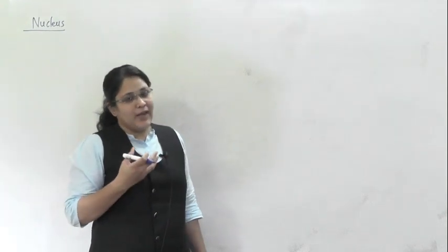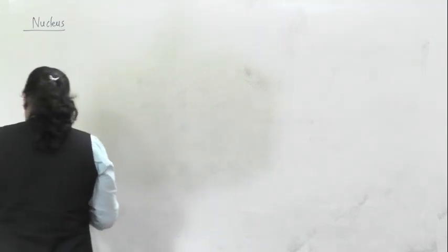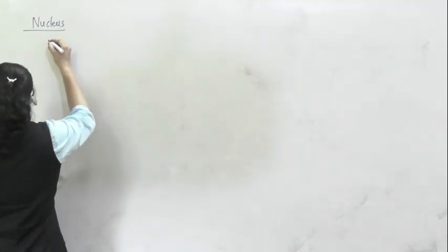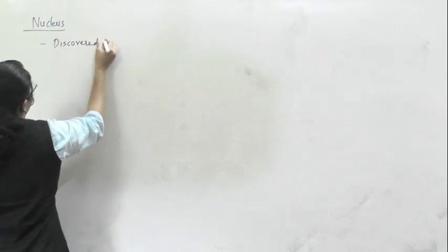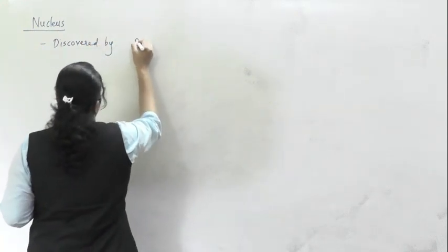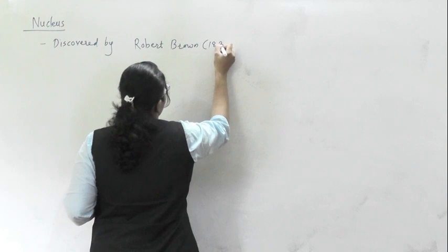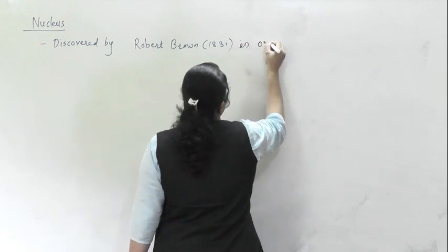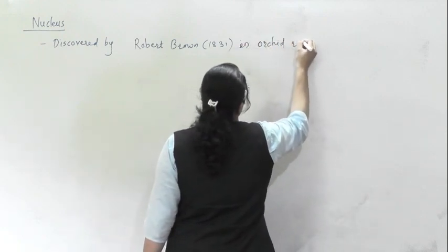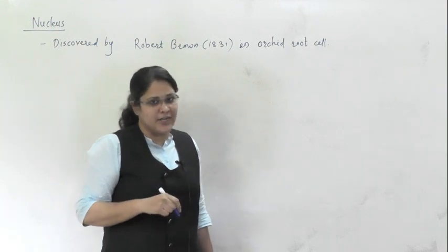Now let's have some basic ideas — some general information related to nucleus — and then we will move toward its ultra structure. Nucleus was first time discovered by Robert Brown in 1831 in a cell of orchid root.